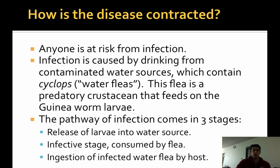It is the offspring that migrate through the body tissue in order to find an exit portal. Once it exits — which can take up to a year — it then releases the embryos, which can number in the millions, back into the water source, repeating the cycle.